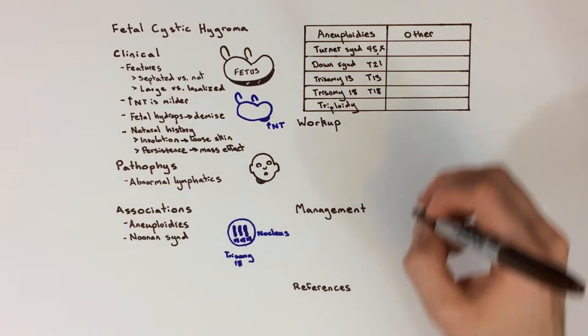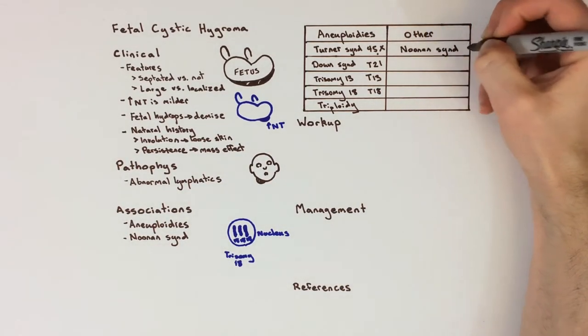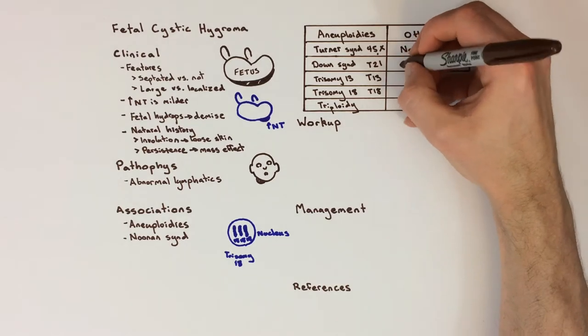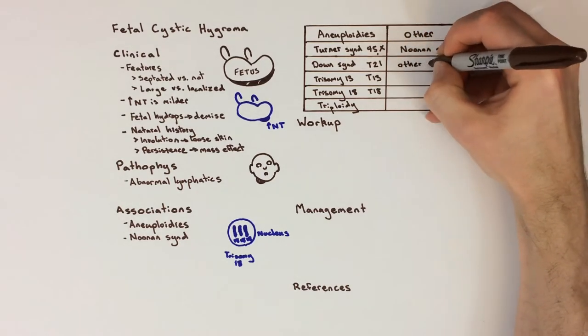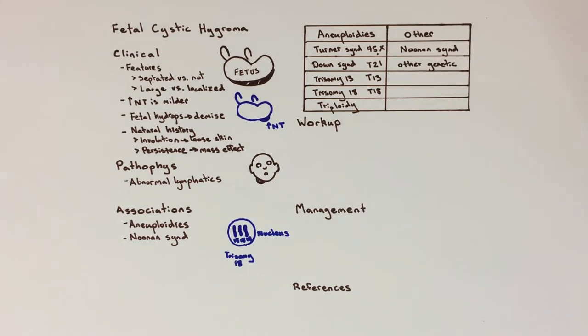There are other genetic causes that don't involve whole chromosome numerical abnormalities. The most likely one of these is Noonan syndrome, a genetic disorder of the signaling pathway called RasMapK. Features of Noonan syndrome include heart defects, such as pulmonary valve stenosis, short stature, learning issues, a webbed neck, and specific facial features.